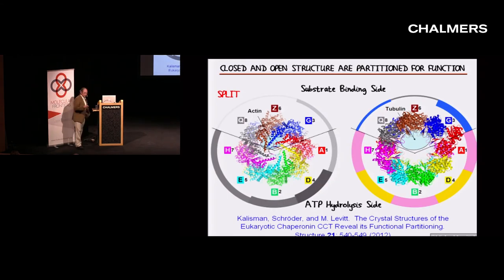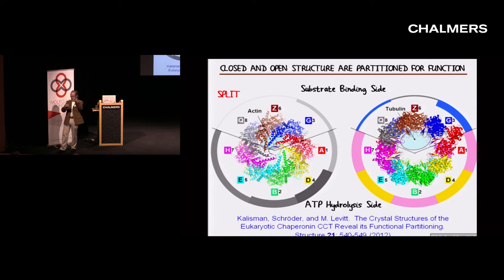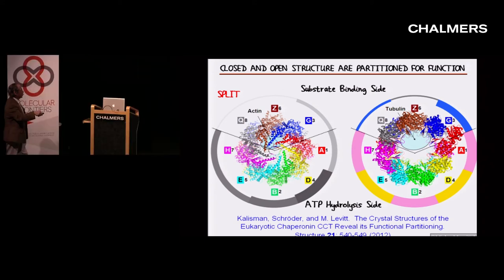It turns out that we also, by using the same crystallographic technique, solved a harder problem — a group in Spain had collected X-ray data for the open form of CCT. This was at 5.5 Ångström resolution, but even there we could actually assign the side chains — they didn't even try to assign the side chains. Based on other people's crystal data for the closed form with actin bound and for the open form with tubulin bound, we have models.